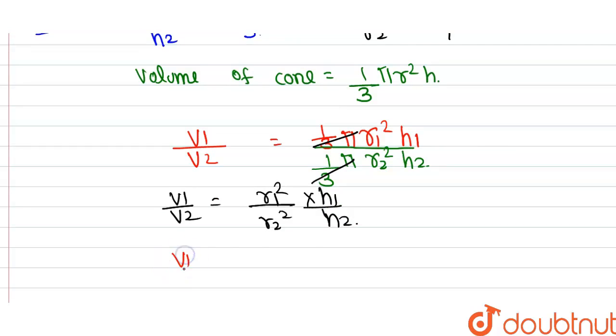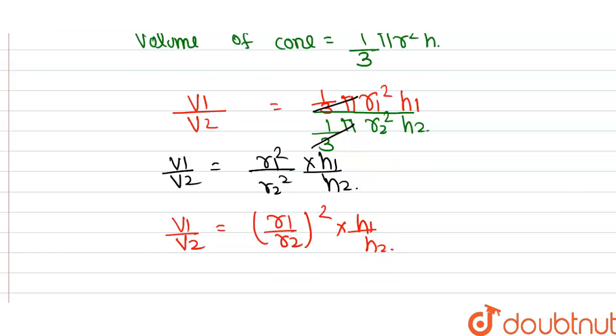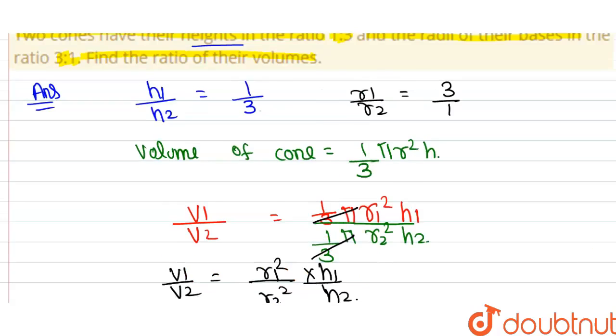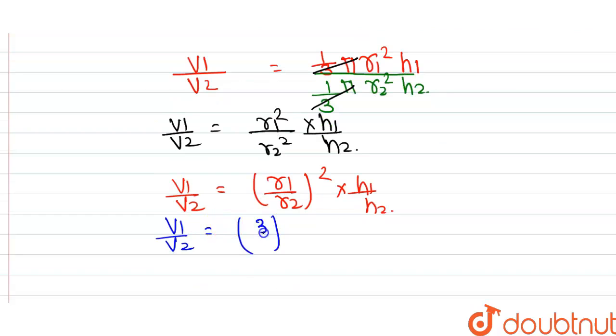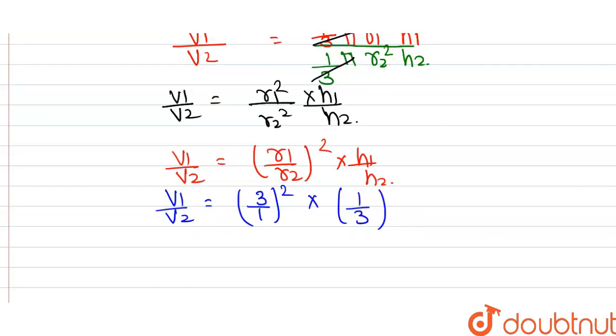Now v1 by v2 equals r1 by r2 whole square into h1 by h2. The value of r1 by r2 is given as 3 by 1 whole square into h1 by h2 that is given as 1 by 3.